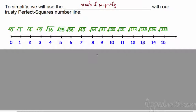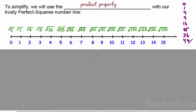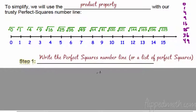Do you need to write out the whole number line? It kind of helps, but if you wanted to write out just the perfect squares as a list, that could be helpful too. 0 times 0, 1 times 1, 2 times 2, 3 times 3 — just writing a list down. It is important that you have at least the list so you can check every number. Step 1: write the perfect squares number line, or a list of perfect squares.